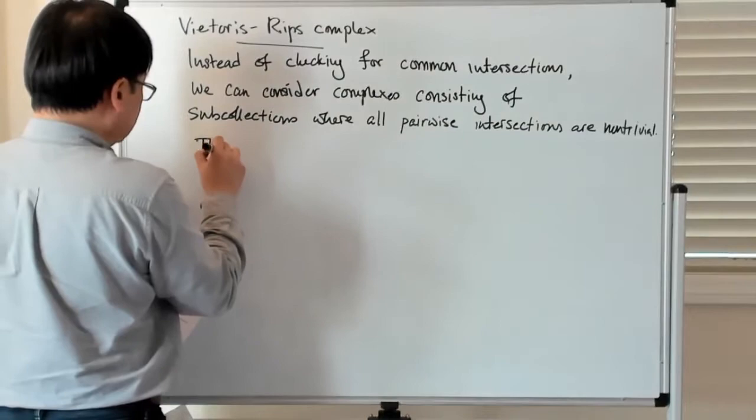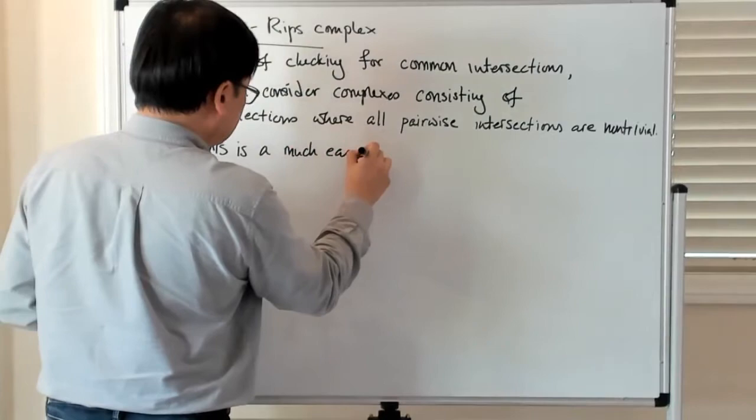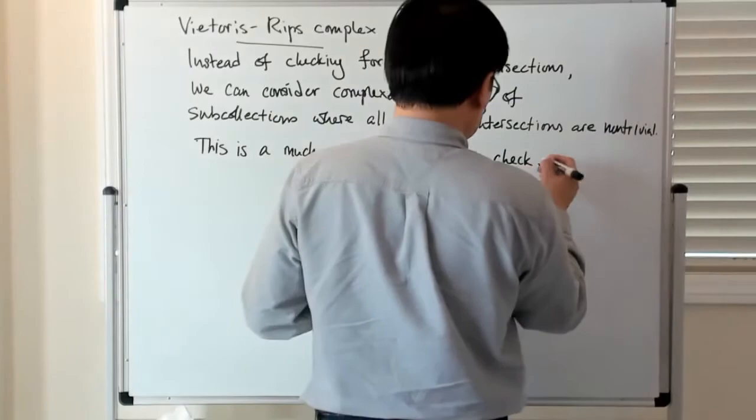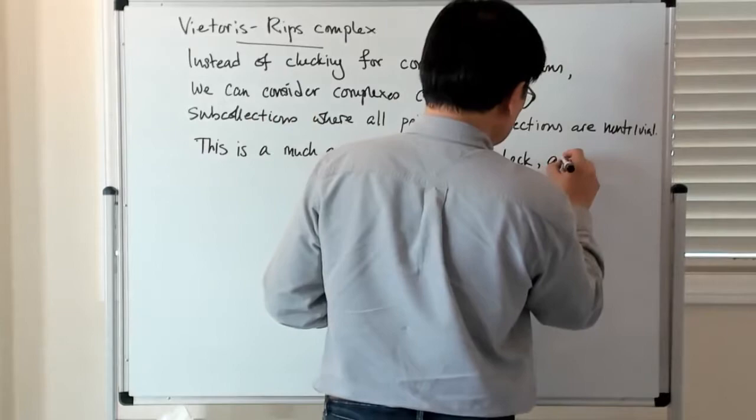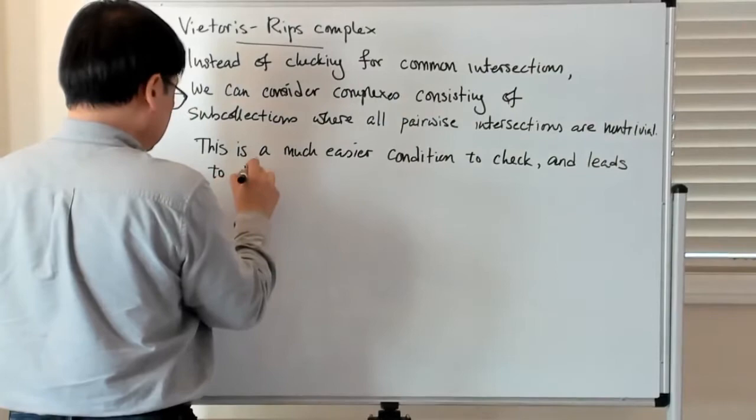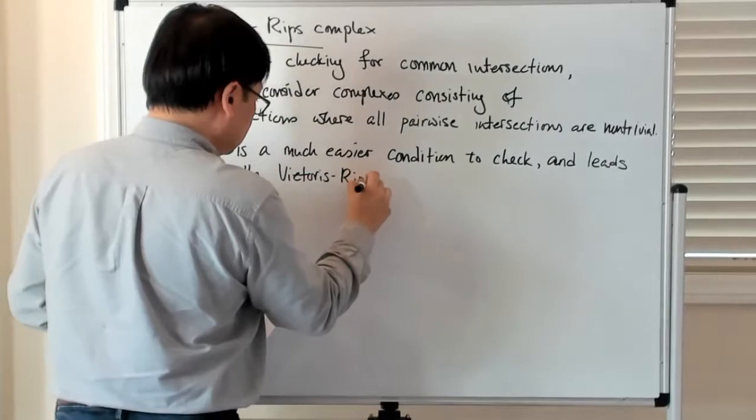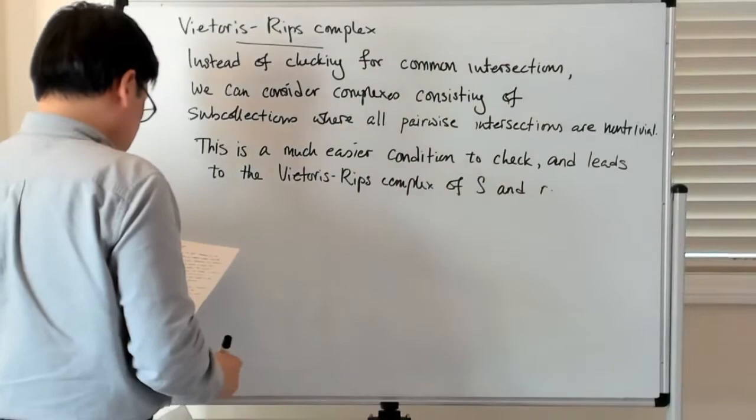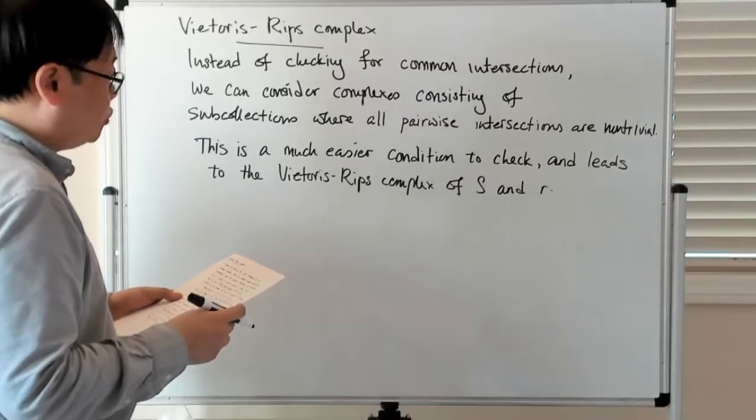And of course this is a much easier condition to check, so this is a much easier condition to check and leads to what is called the Vietoris-Rips complex of S and R, and this consists of all subsets of points of diameter at most 2R.